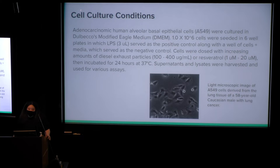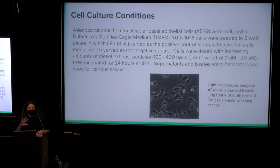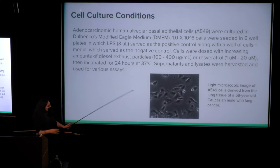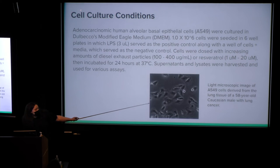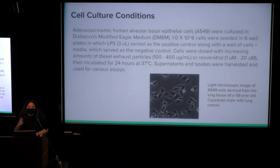Supernatants and lysates were harvested and used for various assays. Supernatants are the liquid the cells grow in, while lysates are collected after you pipette out the supernatant from your six-well plate and use lysis buffer to break open the cells. Here's a picture of the cells under the microscope. It's an immortalized cell line, meaning it can proliferate indefinitely — you can always get more cells.